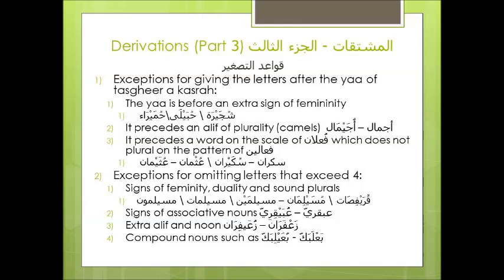Qawaid al-Tasgheer — rules for Tasgheer. Firstly, exceptions for giving the letter after the Ya of Tasgheer a Kasra: one, the Ya is before an extra sign of femininity, as in Shujayra, Hubayla, and Humayra. Second, it precedes an alif of plurality, such as Wujaymal. And third, it precedes a word on the scale of Fu'ulan which does not take a plural on the pattern of Fa'aleen, as in Sukayran and Uthayman.